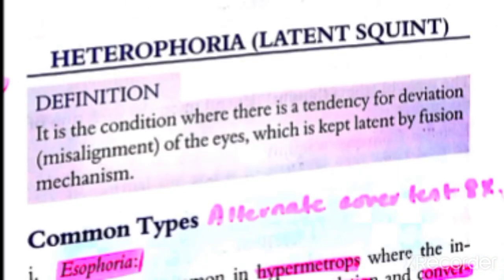We will now discuss latent squint, also known as heterophoria. It can be esophoria or exophoria. It is a condition involving deviation of the eyes which is kept latent by the fusion mechanism. Our brain, through binocular single vision, is used to fuse the two images — but when people are very tired, the fusion mechanism can break down.